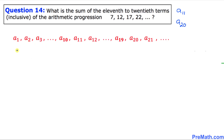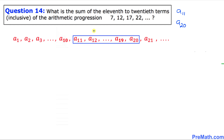Let's understand the question first. We have this arithmetic progression a sub 1, a sub 2, a sub 3, and so on. We want to find the sum of the part between a sub 11 and a sub 20 — the sum of terms from the 11th term to the 20th term.